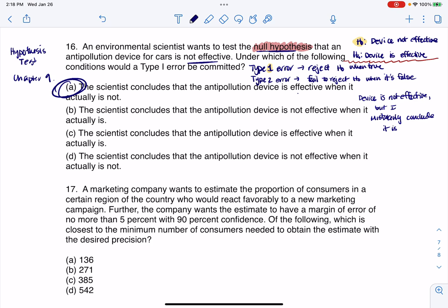let me go through B through D because for me personally, I like to always look at my other options and make sure I feel those are incorrect. So B says the scientist concludes that the anti-pollution device is not effective when it actually is. So this one, if you conclude it's not effective when it actually is, this is the type 2 error.